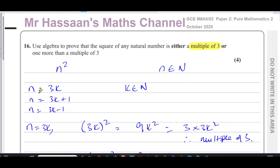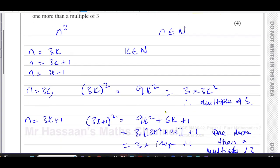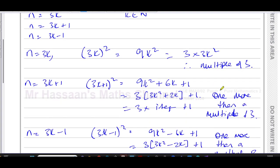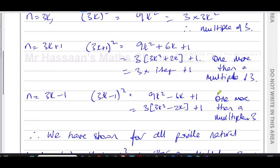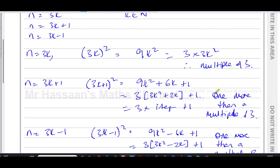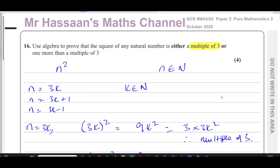So we choose 3k, 3k + 1, and 3k − 1 to cover all possible natural numbers. And we've shown that in every case, n² is either a multiple of three or one more than a multiple of three. That's the complete answer to the question.